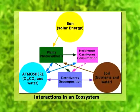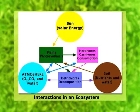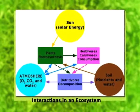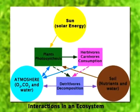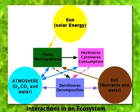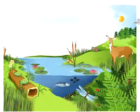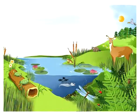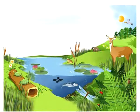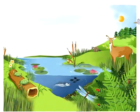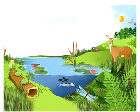Thus, any unit in which all organisms, that is communities in a given area, interact with the physical environment so that the flow of energy leads to clearly defined trophic structure, biotic diversity, and material cycling within the system is known as an ecological system or ecosystem.